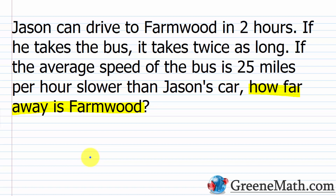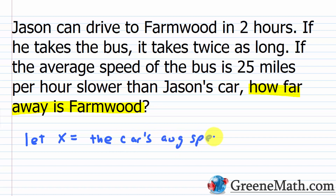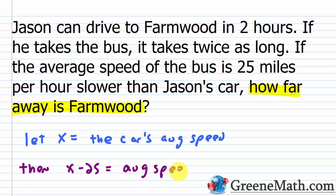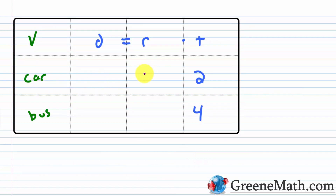Let x be the car's average speed in miles per hour. Since the bus is 25 miles per hour slower than the car, x minus 25 represents the bus's average speed. The distance by car is 2x, and the distance by bus is 4 times (x minus 25).